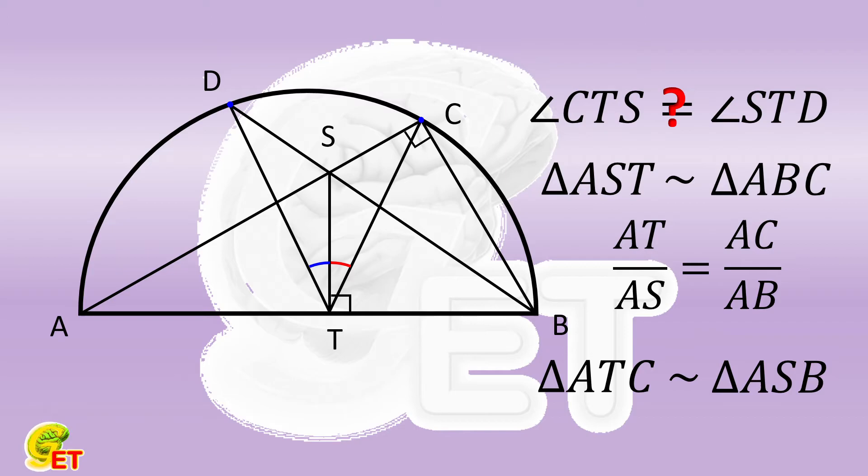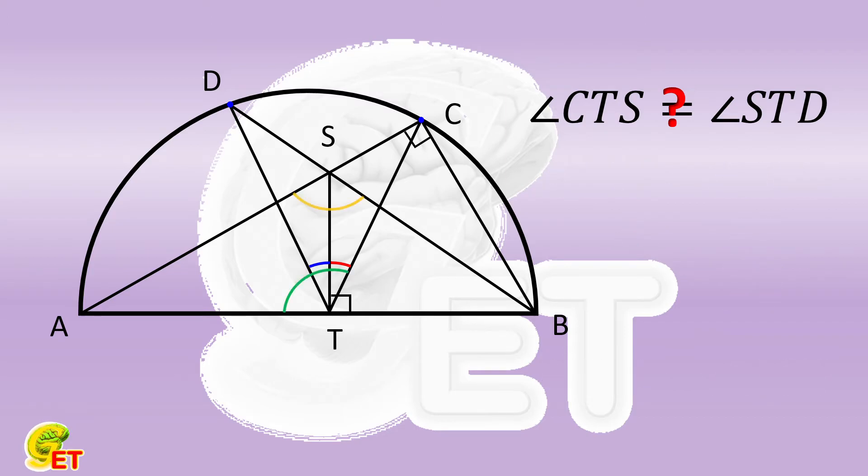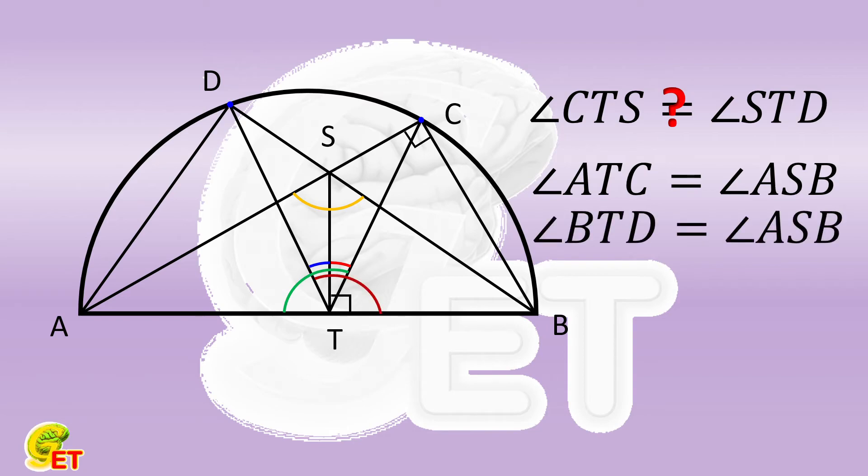The corresponding angles, ATC and ASB, are therefore also equal. If we connect the other two points A and D, for the same reason, we can obtain that the angle BTD is also equal to the angle ASB.